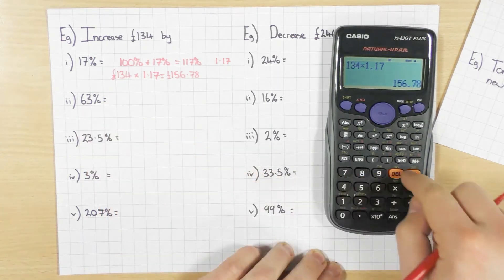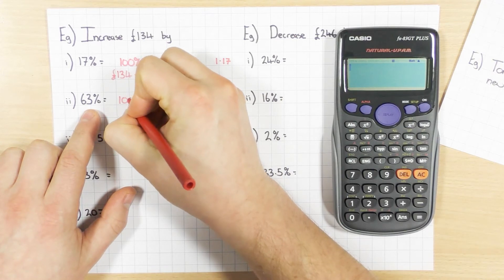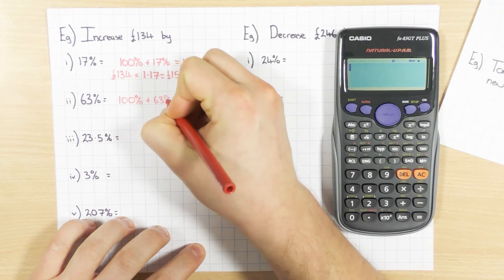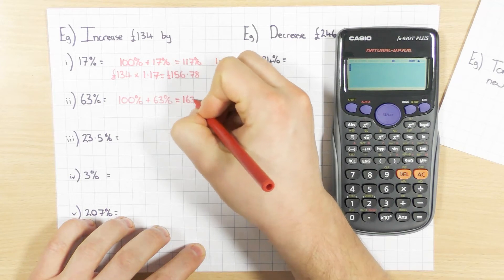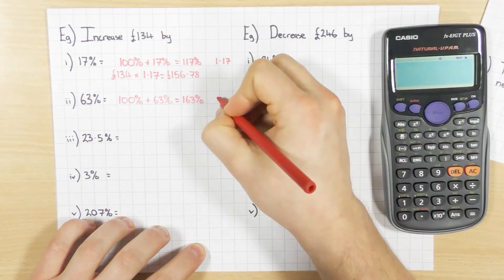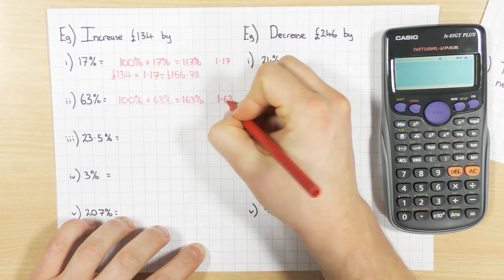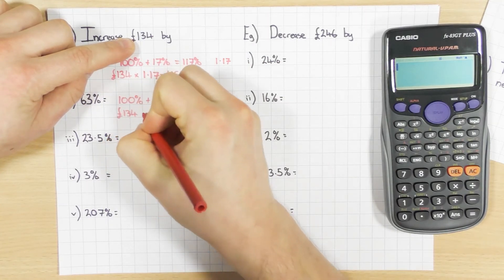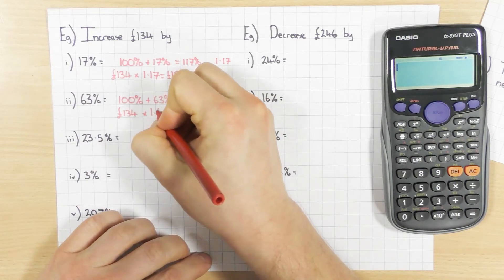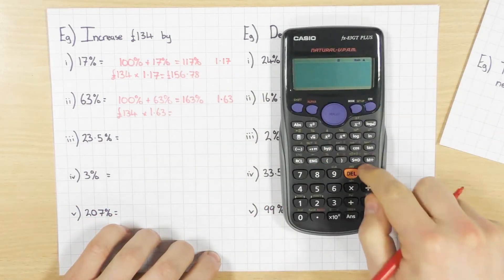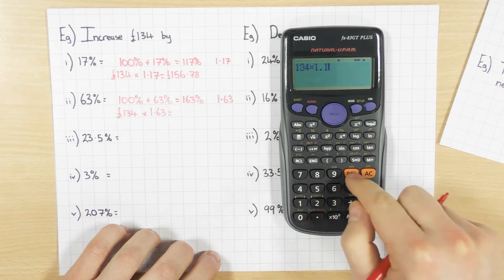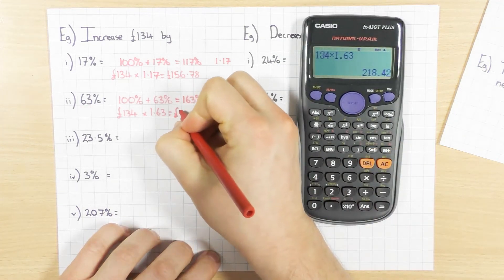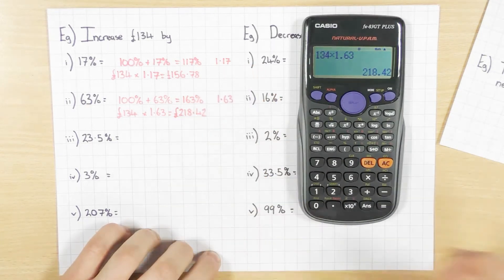Next one. This time I'm increasing by 63%. Same process: start off with 100%, increase by 63% gives 163%. Convert that to a decimal — divide by 100 — to get the decimal multiplier, which is 1.63. So I'm going to take £134 and times it by 1.63. Calculator: 134 times 1.63, and I get the answer of £218.42.